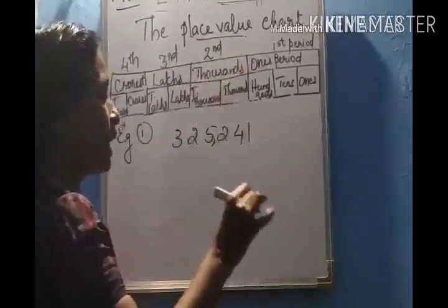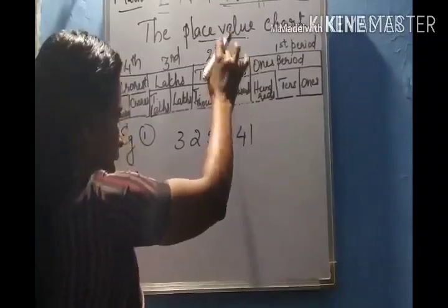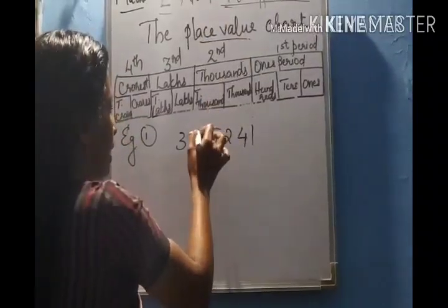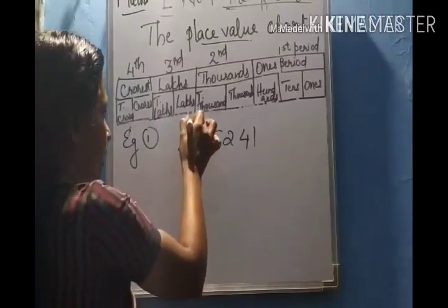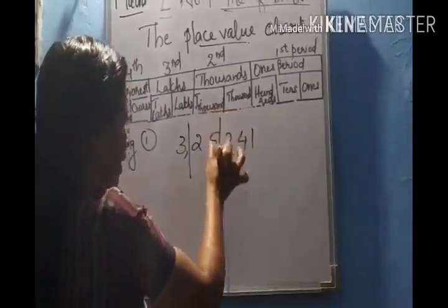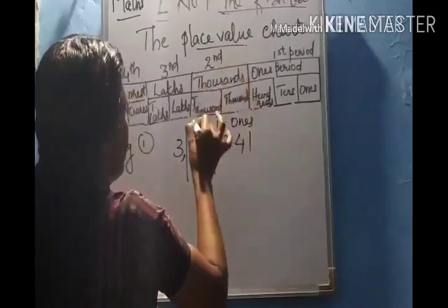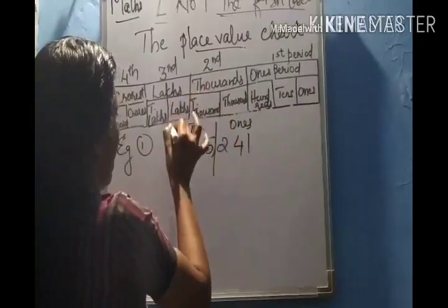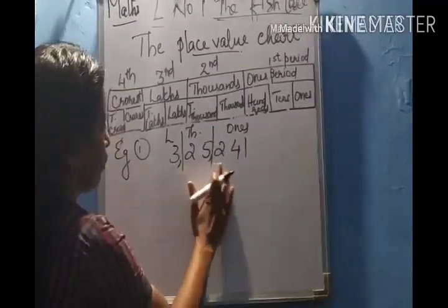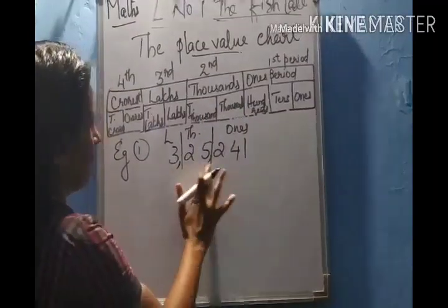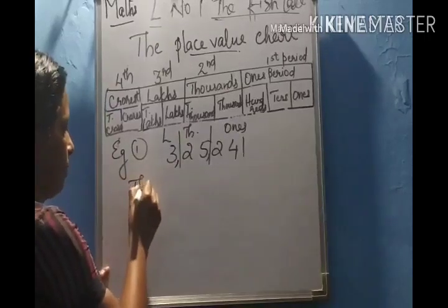The second comma comes after the second period, which is the thousands period. Thousands and ten thousands, then lakhs. So we divide it into three periods: ones period, thousands period, and lakhs period. Now it will be very easy for you to read the number. How many lakhs? Three lakhs.